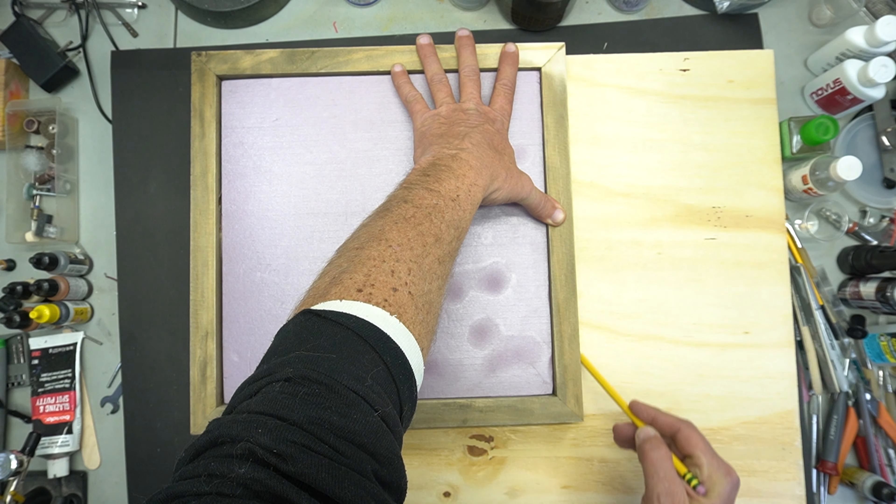When I do put it on the table saw, I am going to cut it just a little bit bigger than the frame itself and then I'm going to sand down the edges to make sure that they're perfectly level or square with the frame. Now I'm all marked out and ready to cut.